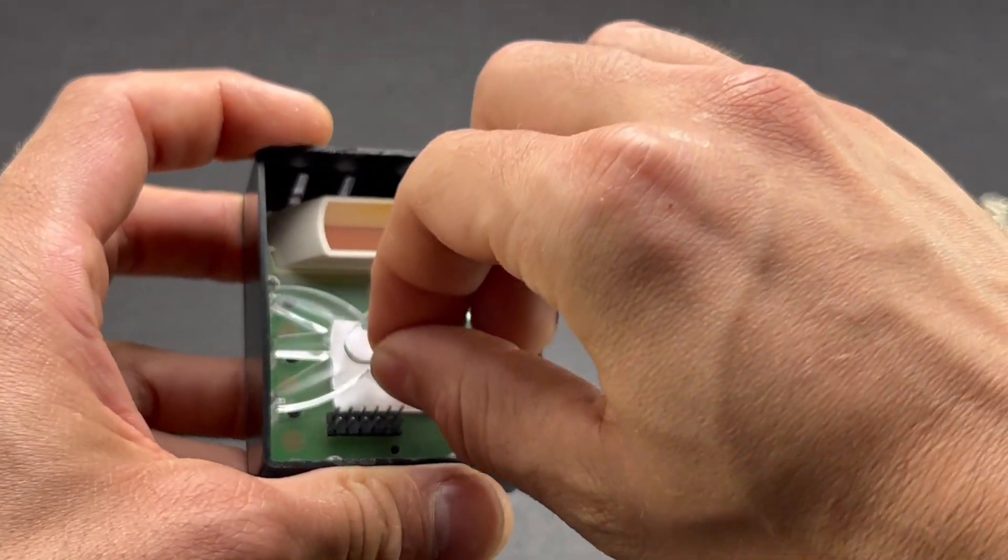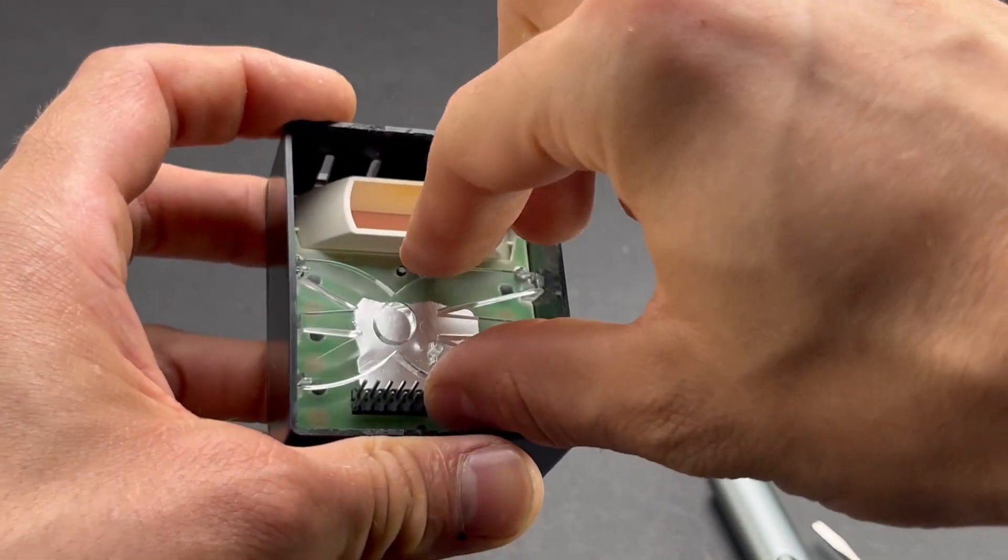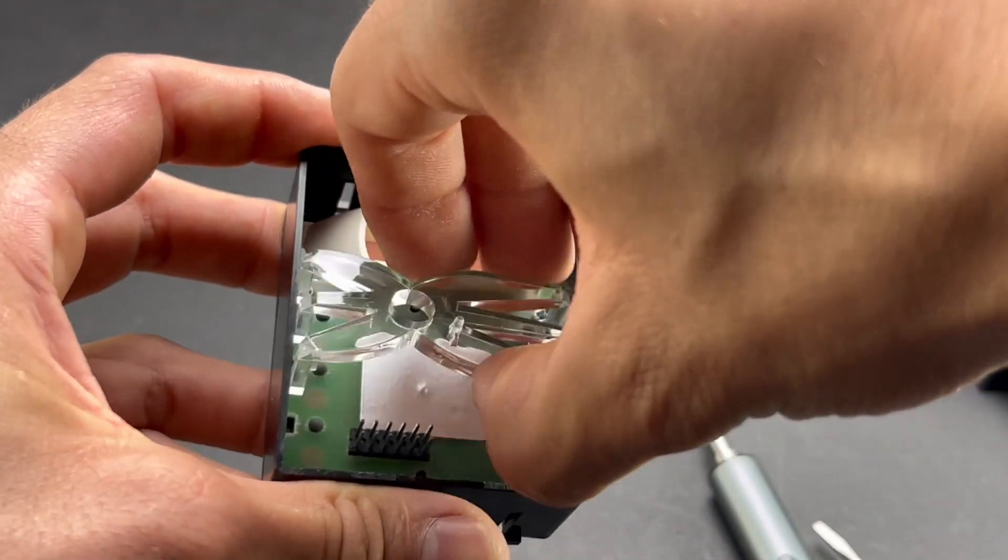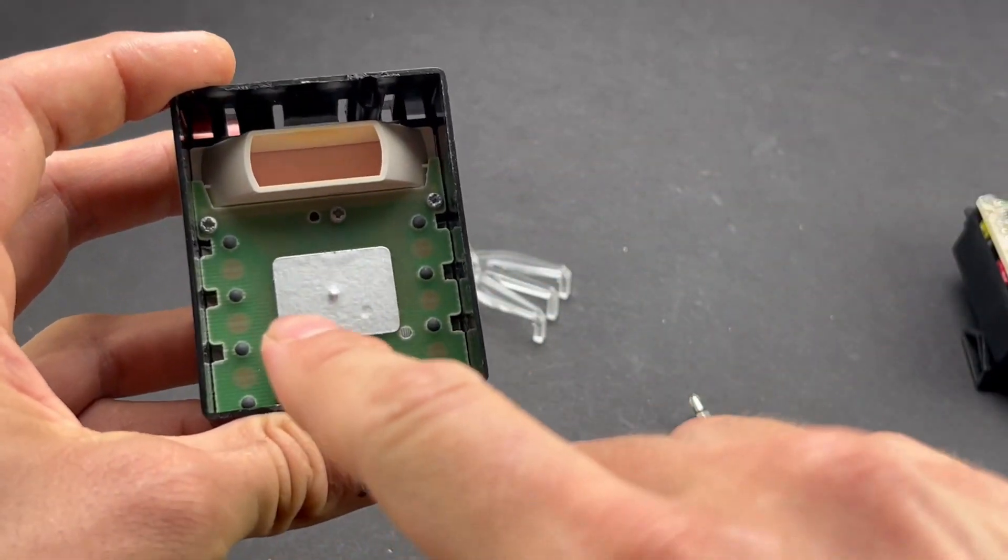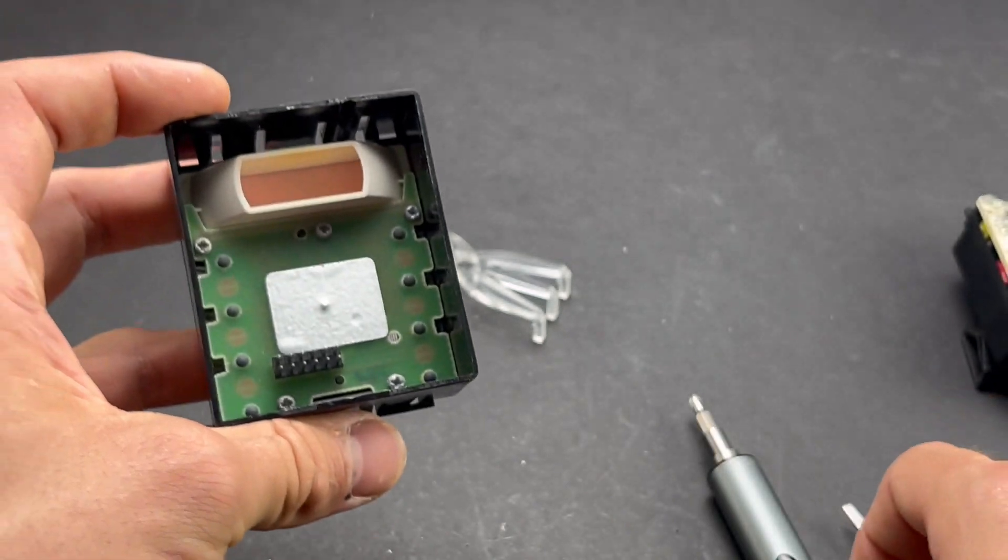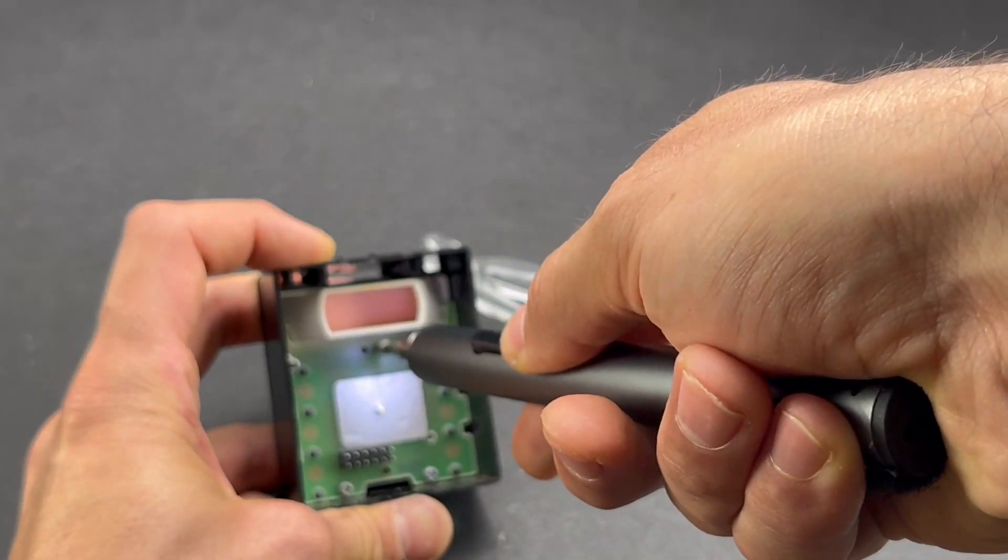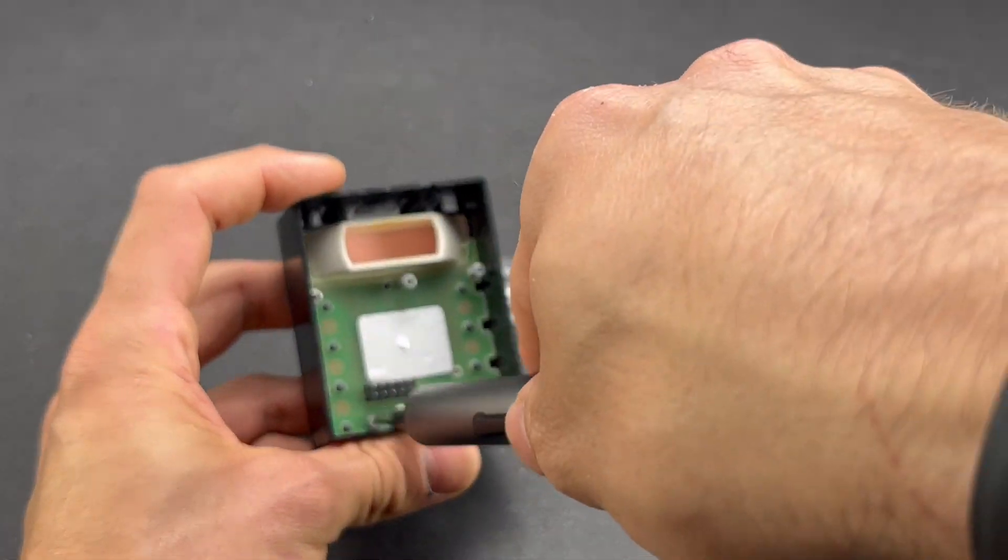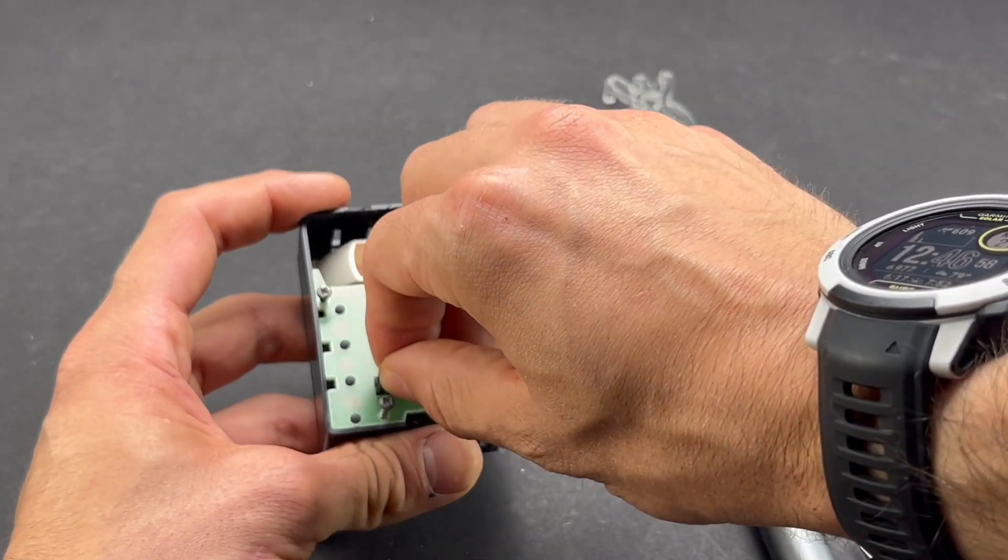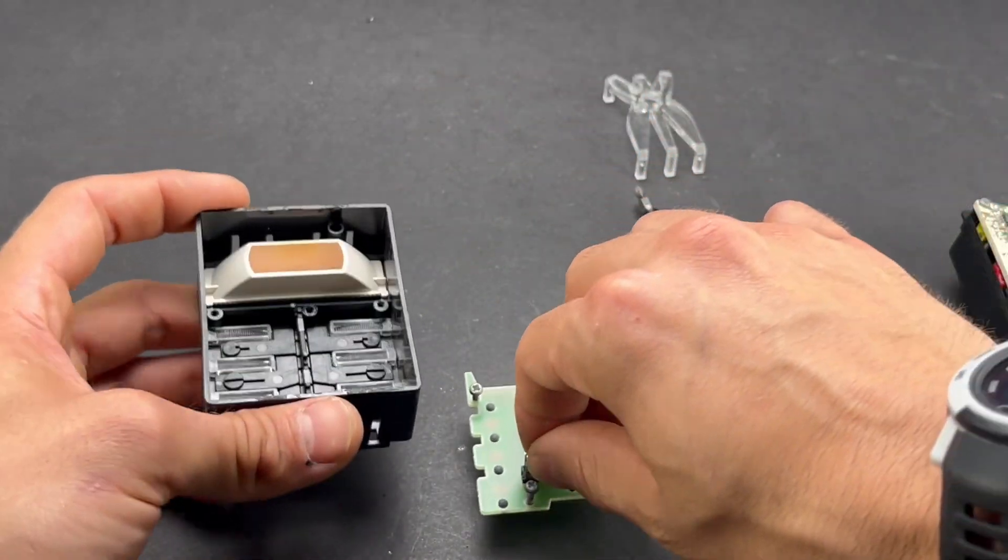So the next step is to remove this light diffuser. You'll see those five screws - one, two, three, four, five - just remove all of those. And once it's removed you can just pop this piece right out like that.